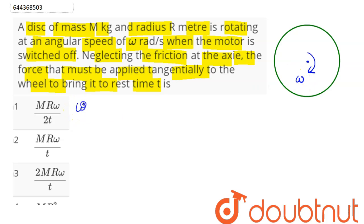Finally, it comes to rest, so the final angular velocity becomes 0 in time t. We need to find the tangential force which must be applied in the opposite direction to bring angular retardation in the opposite sense.